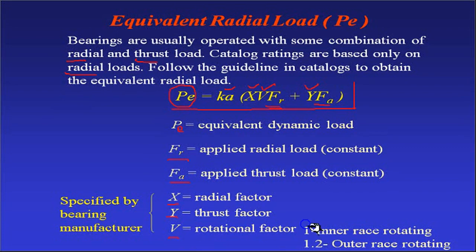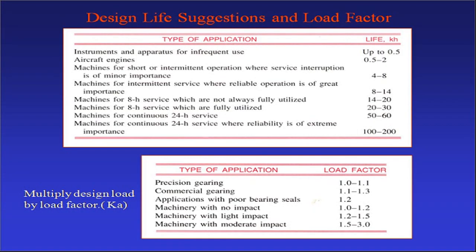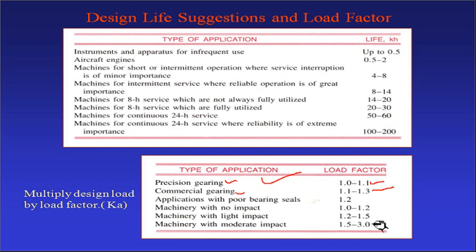The rotation factor V is generally 1 if the inner race is rotating, and 1.2 if the outer race is rotating. The application factor Ka, also called the load factor, varies by application type: 1.0–1.1 for precision gearing, 1.1–1.3 for commercial gearing, 1.2 for poor bearing seals, 1.0–1.2 for machinery with no impact, 1.2–1.5 for light impact, and 1.5–3 for moderate impact.